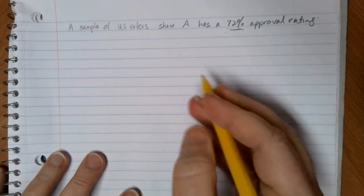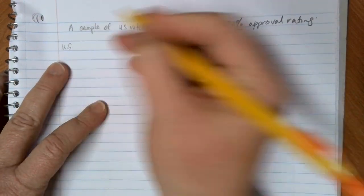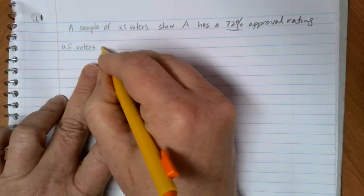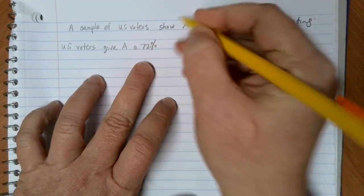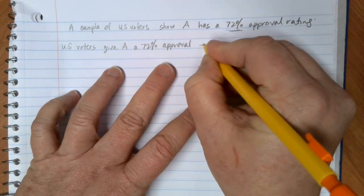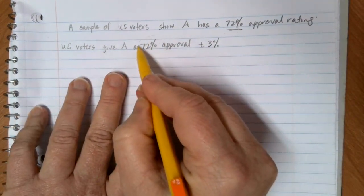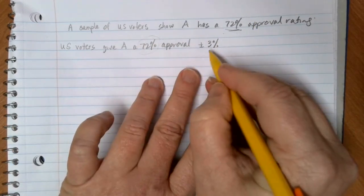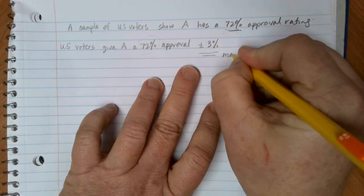If they want to use this as an estimate for a parameter, if they wanted to change the wording, they might say U.S. voters give candidate A a 72% approval plus or minus 3%. In this case, what they're doing is they're using our statistic that was gathered from a sample and they're acknowledging that there is some variability within the result. This plus or minus 3% is what we call a margin of error.